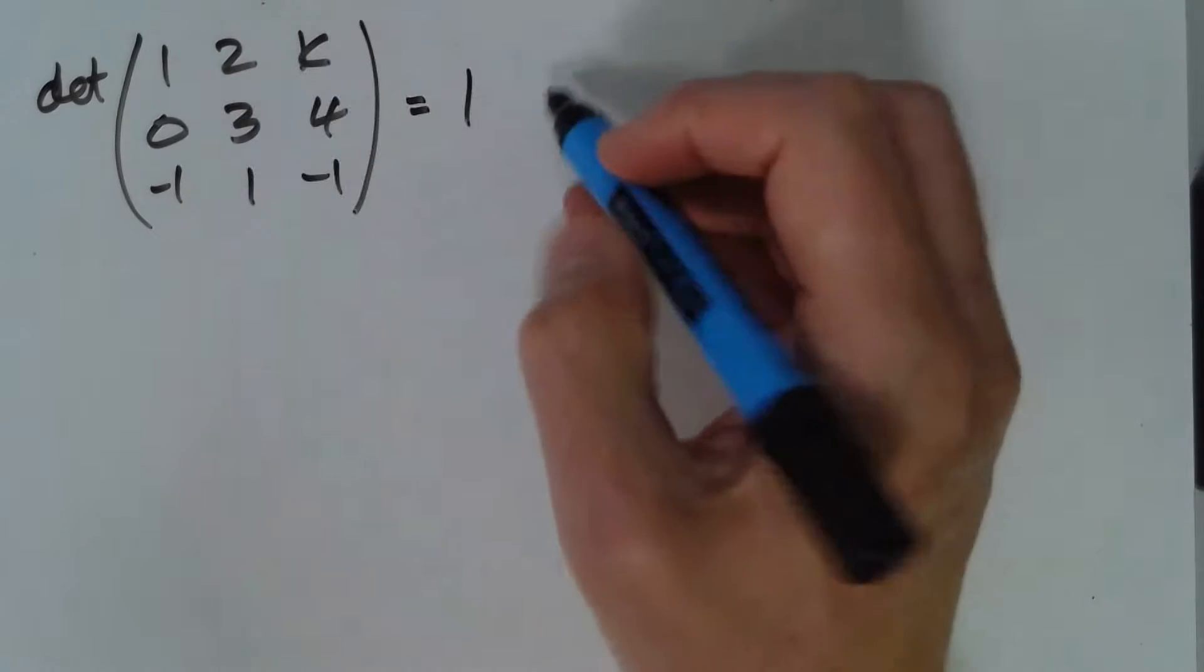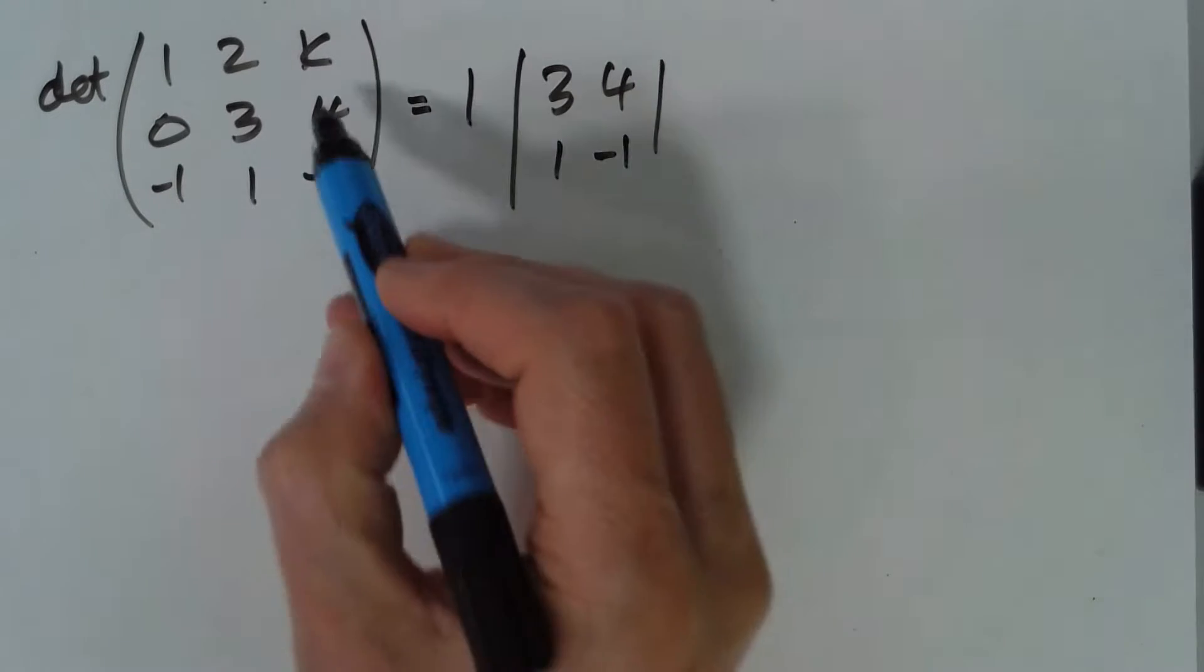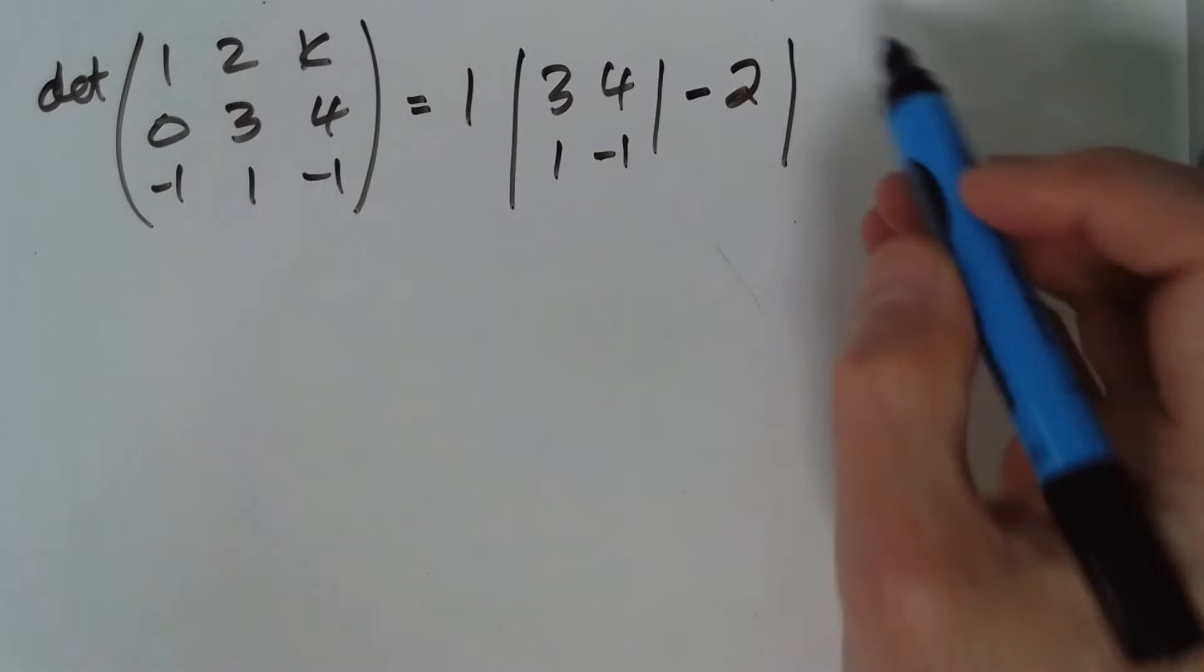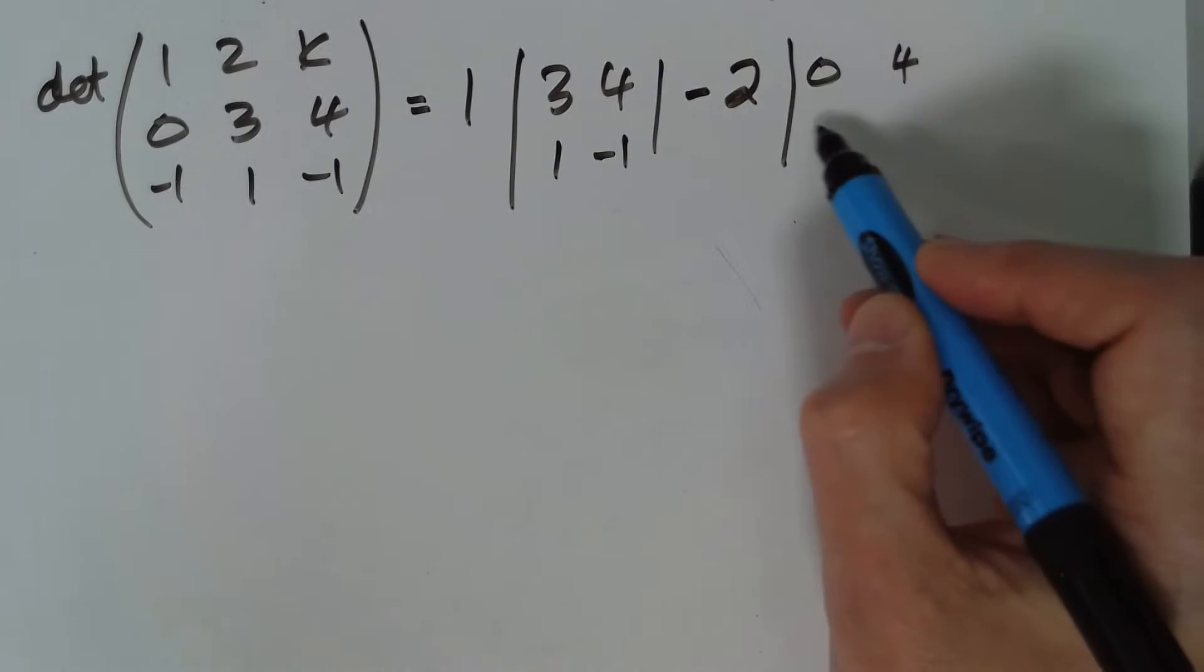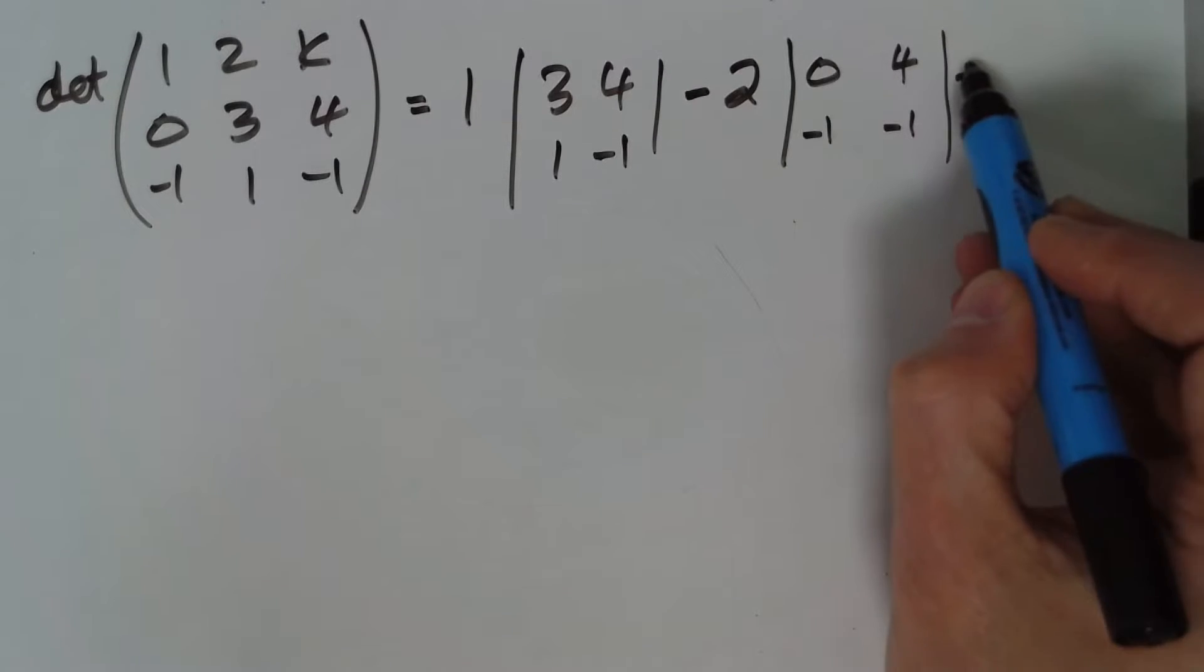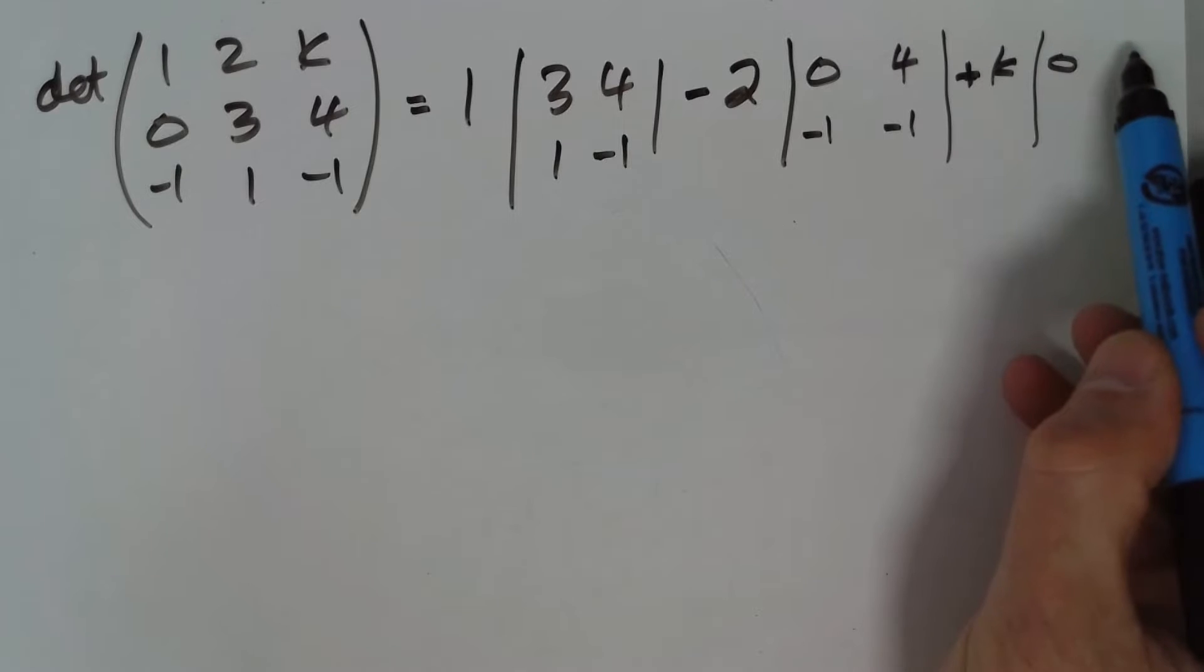And the way we do it is it's 1 times the determinant of this little corner down here. The next bit is minus 2 times the determinant of 0, 4, minus 1, minus 1. And then plus k times the determinant of this little square down here, and that's 0, 3, minus 1, 1.